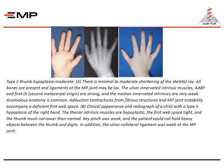Type two thumb hypoplasia — moderate: there is minimal to moderate shortening of the bones and ligaments at the metacarpophalangeal joint may be lax. The ulnar-innervated intrinsic muscles and the median-innervated intrinsic muscles are very weak. Anomalous anatomy is common.